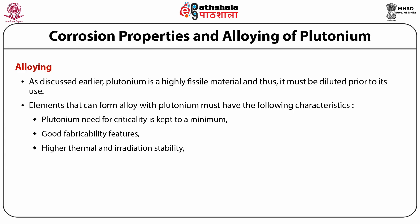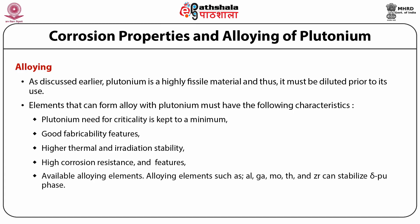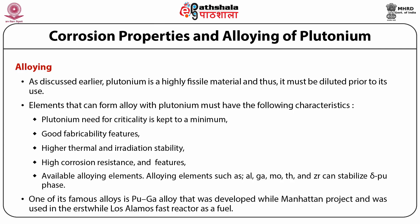Fourth, high corrosion resistance, and lastly, available alloying elements. Alloying elements such as aluminium, gallium, molybdenum, thorium and zirconium can stabilize the delta-Pu phase. One of its famous alloys is the Pu-gallium alloy that was developed during the Manhattan Project and was used in the erstwhile Los Alamos fast reactor as a fuel. This alloy increases the corrosion resistance of plutonium by several times.